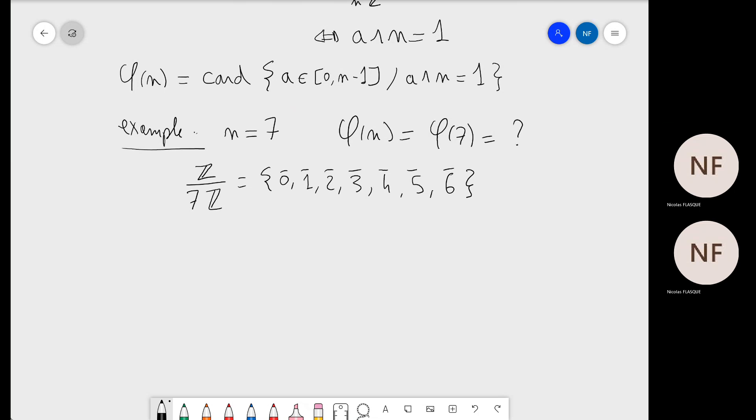...zero bar, one bar, two bar, three bar, four bar, five bar, and six bar. Perhaps you remember the tables where we have columns stating that an element has an inverse or not.